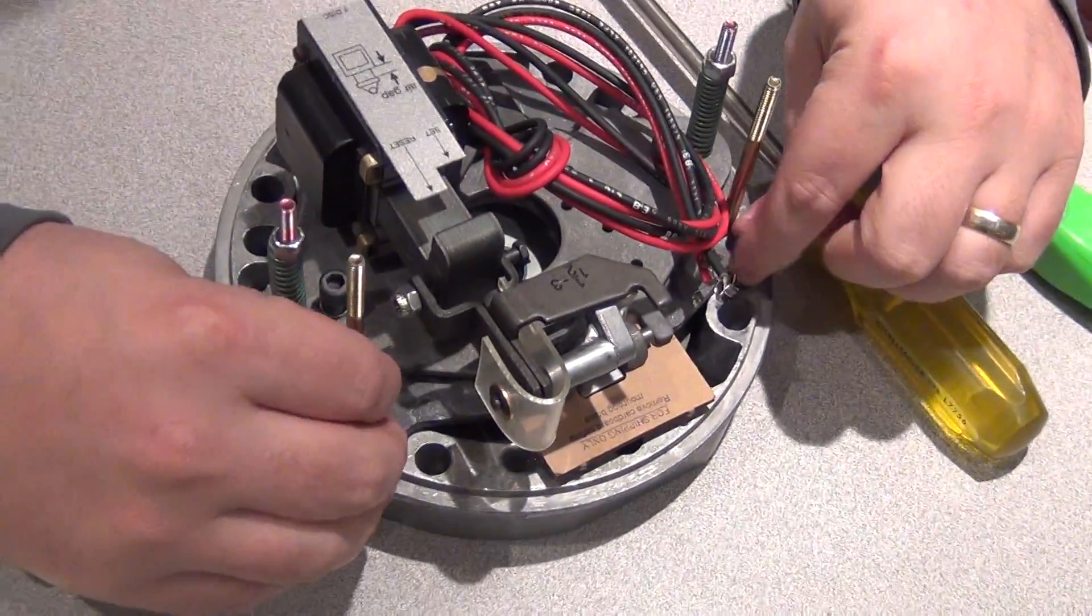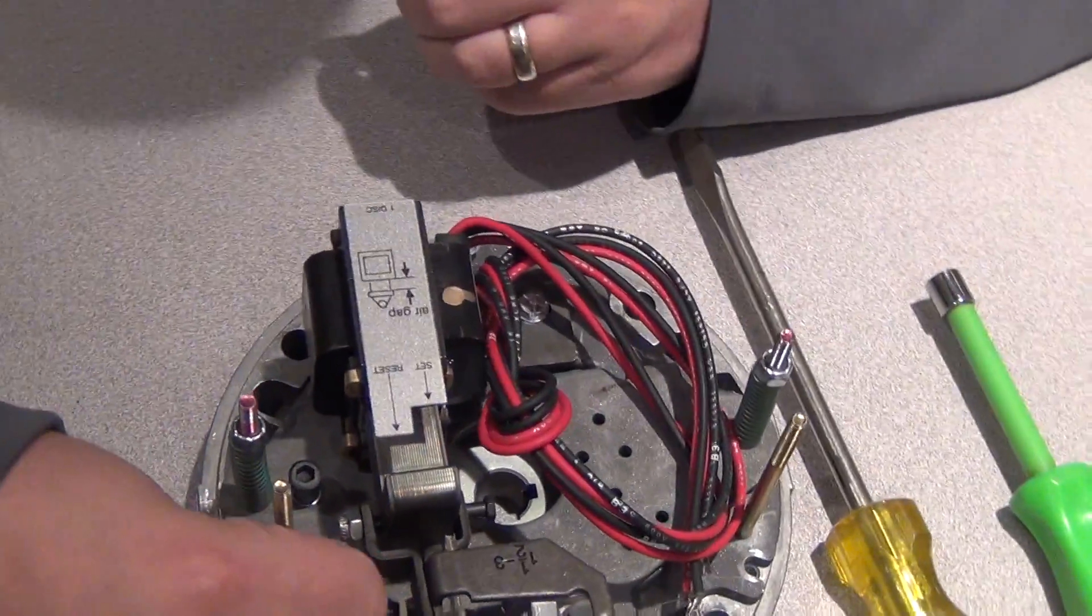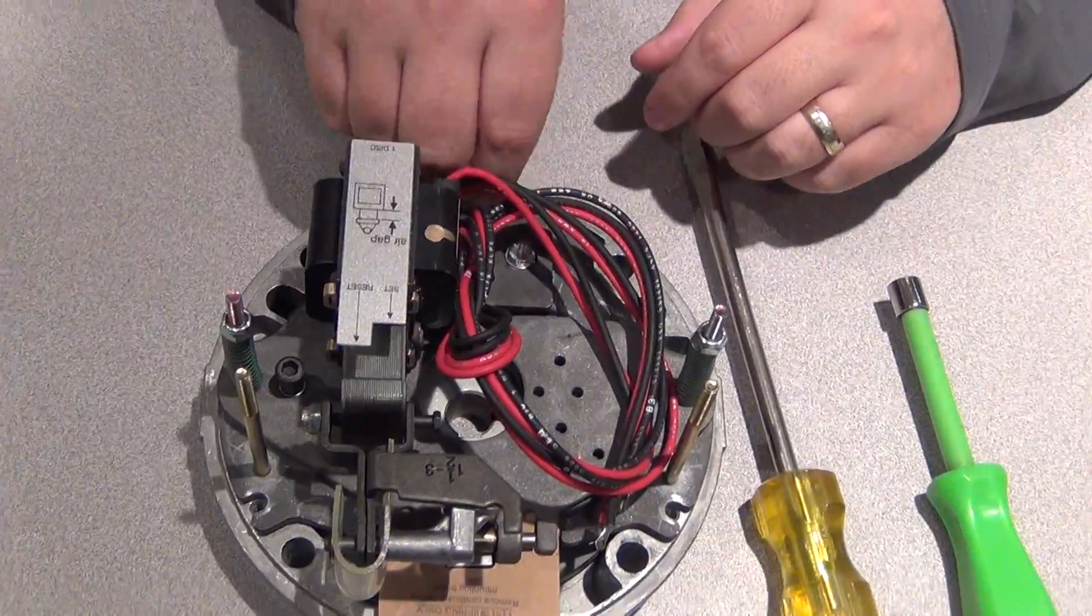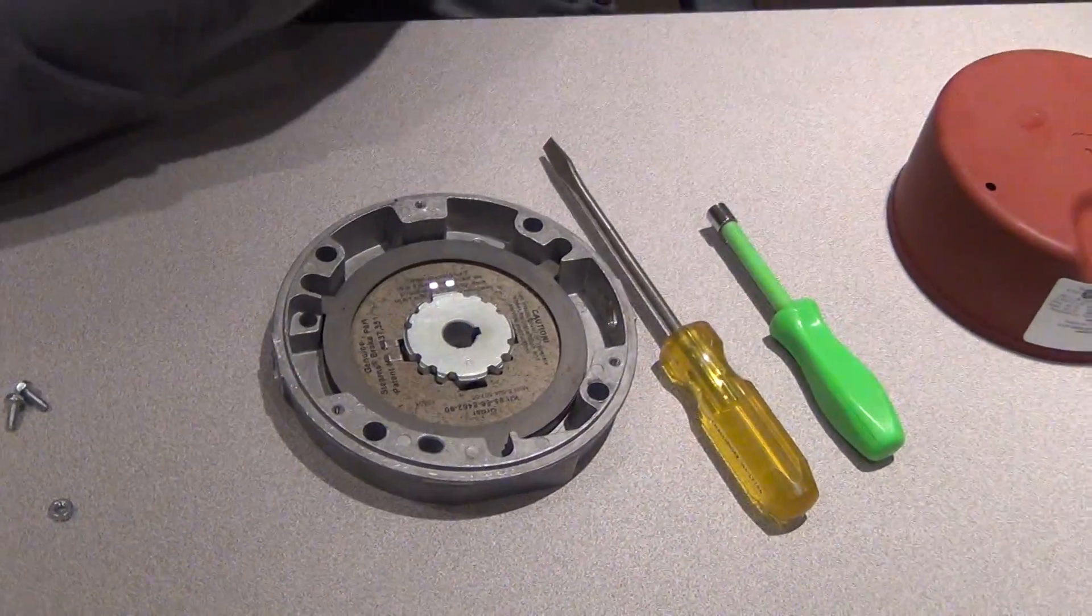Now you'll notice three screws here. You want to pull these out to get to the friction discs. Just pull these out here and set that aside.